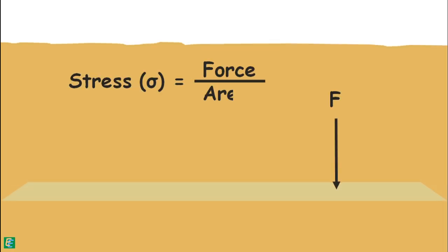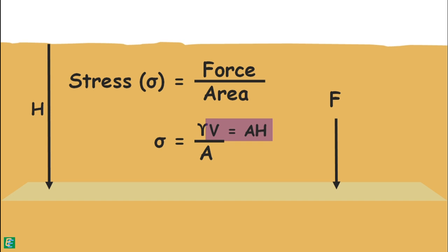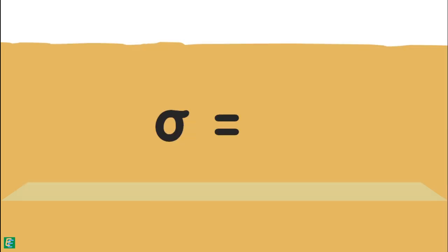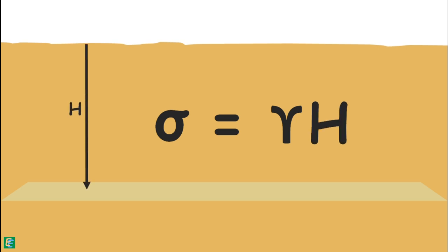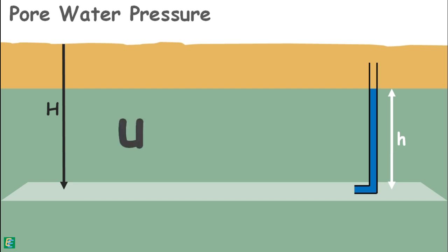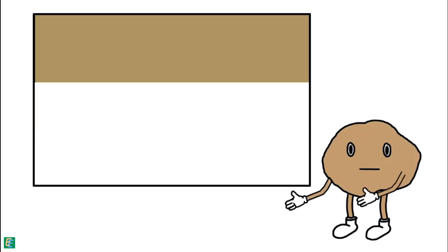Stress at any plane under the soil can be given as the force on that plane divided by the area of that plane. The force on that plane is the weight of soil above it — the unit weight of soil multiplied by its volume, which is area multiplied by the height of the soil mass. So we can directly write the stress under any material as the unit weight of material multiplied by the height of the material above that point. Pore water pressure at any depth can be measured by inserting a standpipe at that point and observing the height of the water column rise; pore water pressure equals the unit weight of water multiplied by that height.